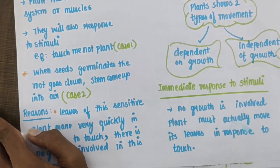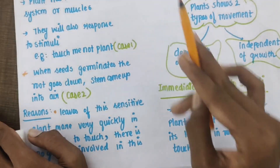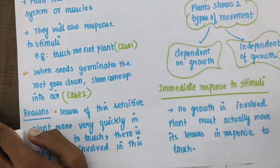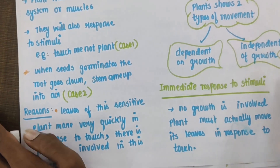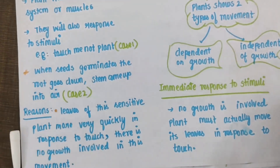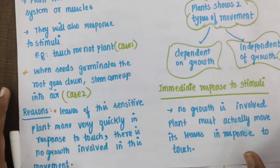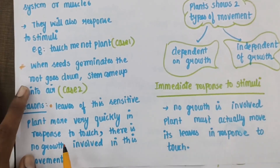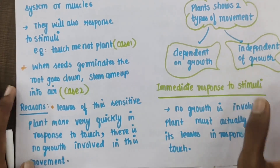If we touch the plant, the root goes down and the stem goes up into the air. We are going to discuss about these two types of movement in detail. The plant moves very quickly in response to touch, and there is no growth involved here.